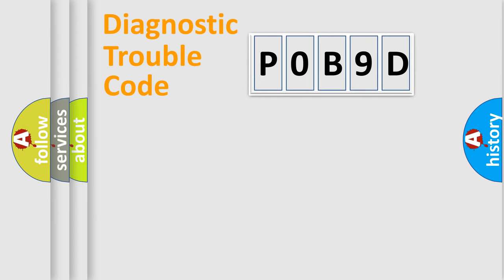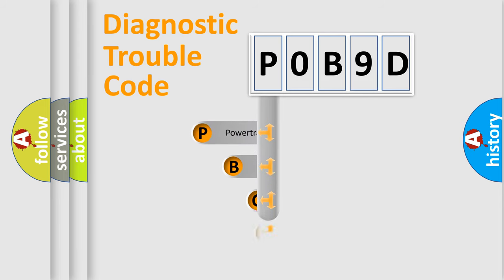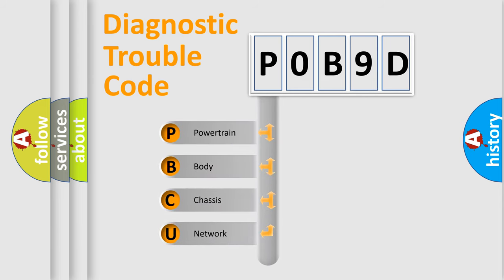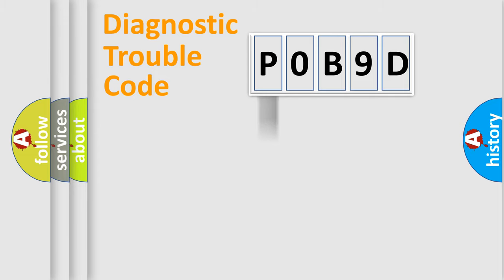First, let's look at the history of diagnostic fault code composition according to the OBD2 protocol, which is unified for all automakers since 2000. We divide the electric system of an automobile into four basic units: Powertrain, Body, Chassis, and Network. This distribution is defined in the first character of the code.